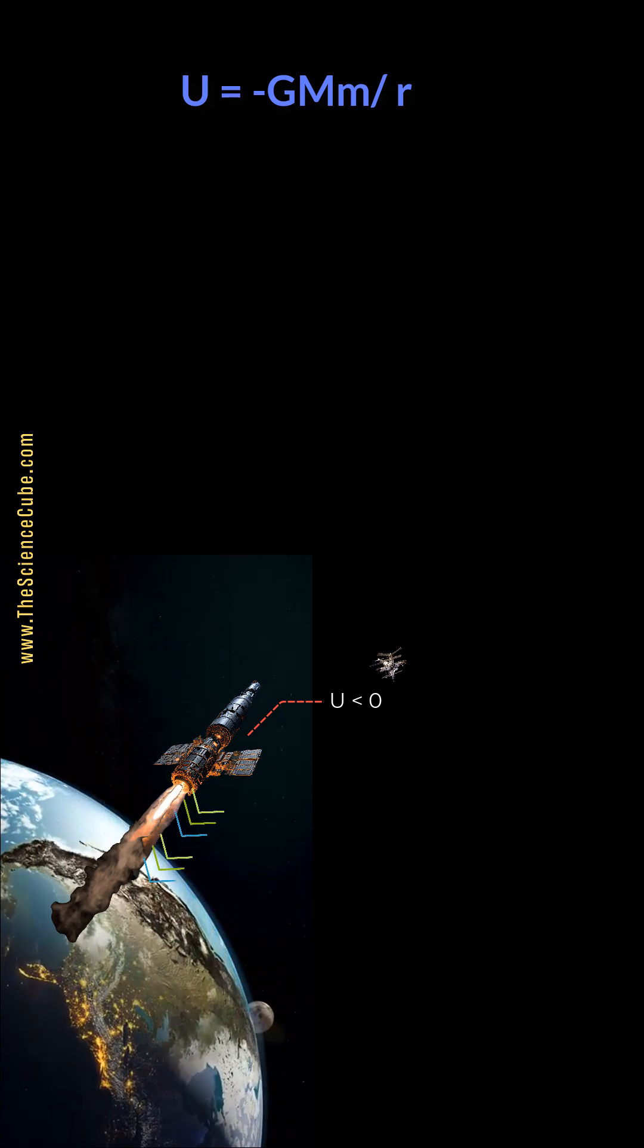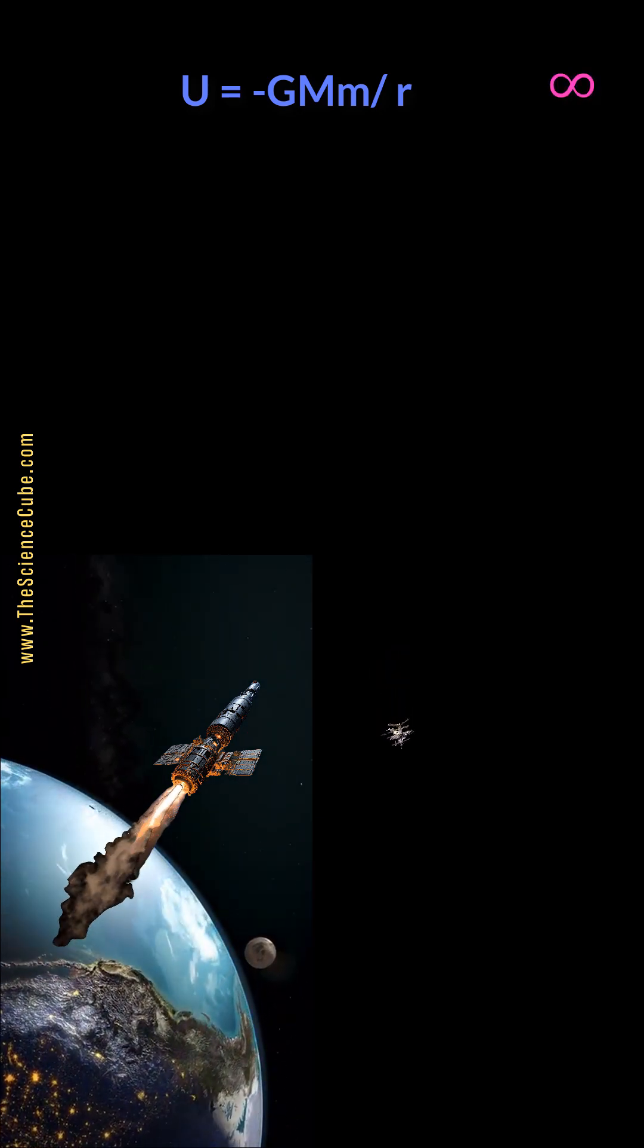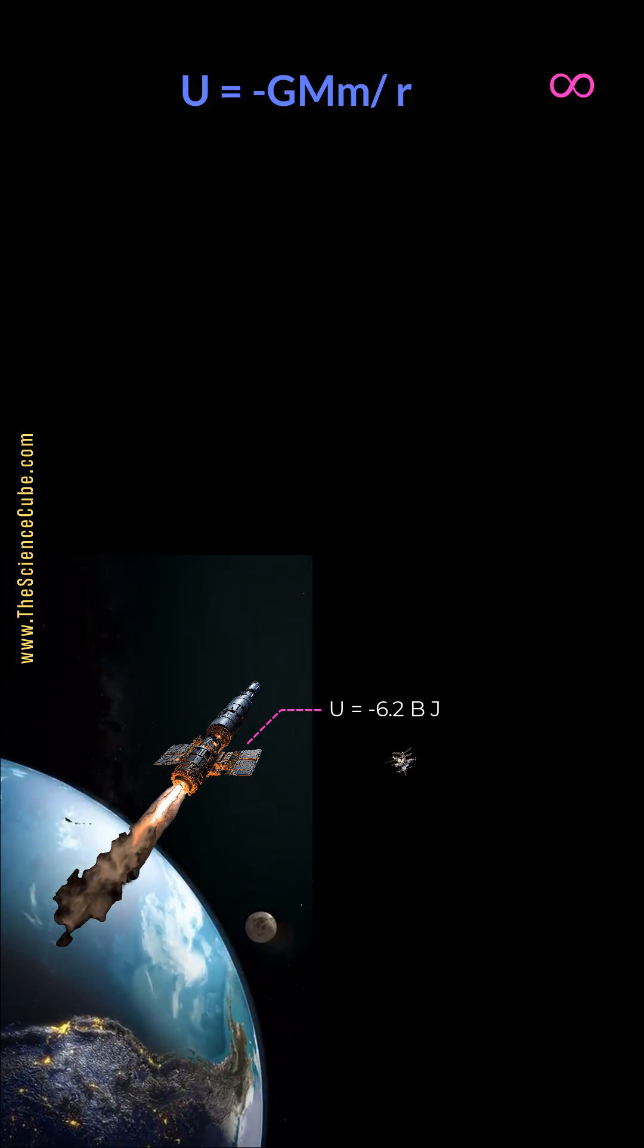Let's say you have a 100 kilogram rocket sitting 100 kilometers above Earth. Its potential energy, I calculated, would be about minus 6.2 billion joules.